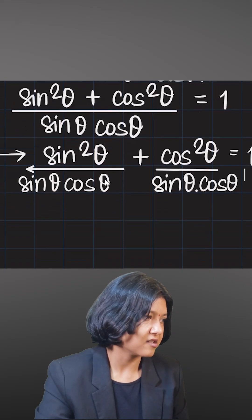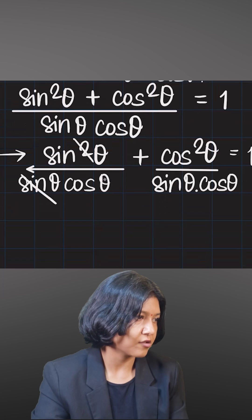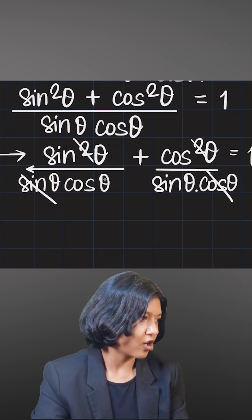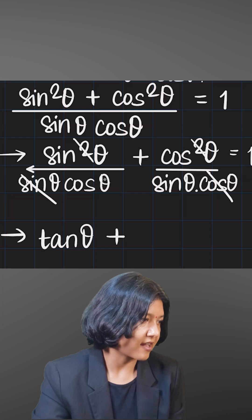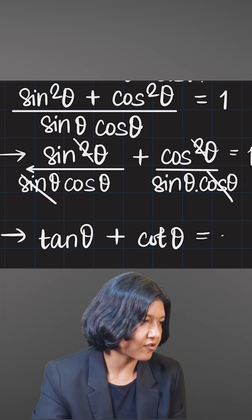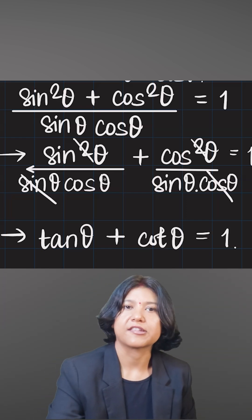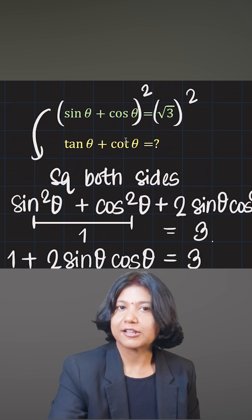On the right side all I have is 1. I'm going to keep it as sine square theta. One of the sines cancels out, one of the cosines cancels out. I got sine by cos, which is tan, so tan theta. Cos by sine is cot, so I just got the answer that tan theta plus cot theta has to be 1.